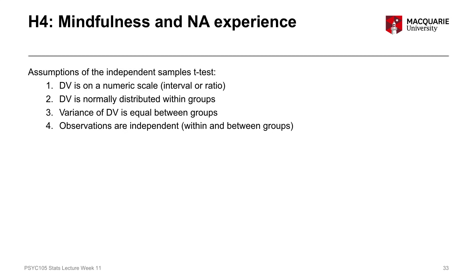On to our last hypothesis — looking at the experimental induction of mindfulness and whether that changes people's experience of negative affect after the task itself. This is also addressed with an independent samples t-test, so the same four assumptions apply. We know that our dependent variable, negative affect experience, is on a numeric scale, and our observations are independent because of how the data was sampled. To check normality of the distribution of negative affect experience, we do the same thing as previously.